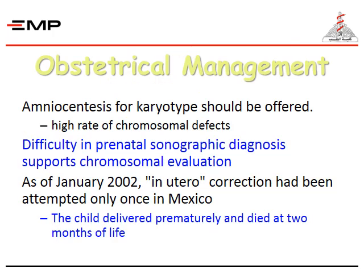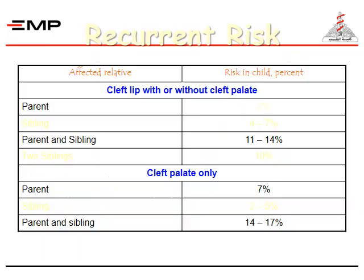For obstetrical management, amniocentesis for karyotyping should be offered, as a high rate of chromosomal defects can be detected. Difficulty in prenatal sonographic diagnosis further supports chromosomal evaluation. As of January 2002, a uterine correction had been attempted only once in Mexico; the child was delivered prematurely and died at two months of age. The recurrence risk varies with the affected parent, siblings, and parent's siblings at different percentages.